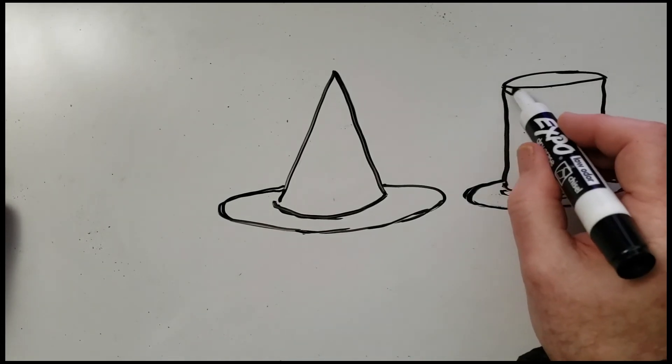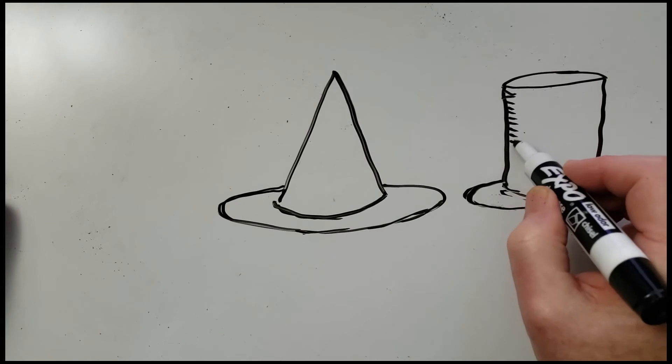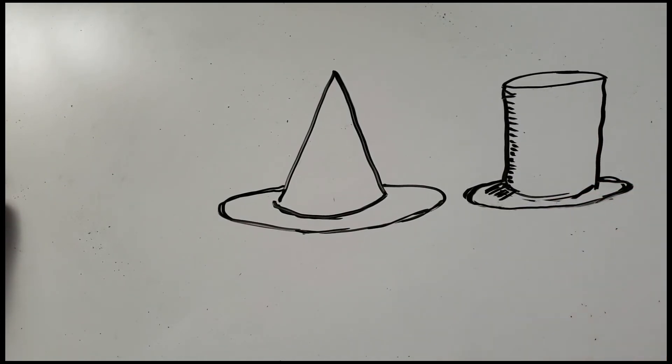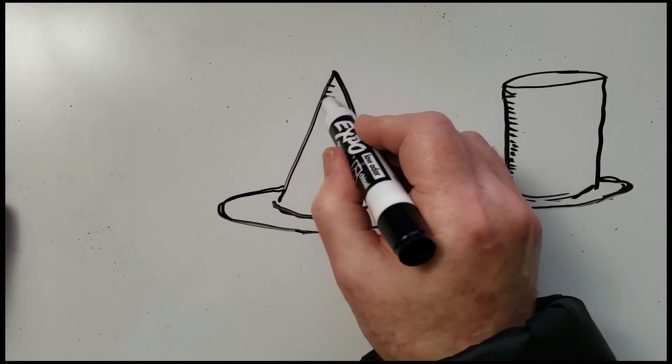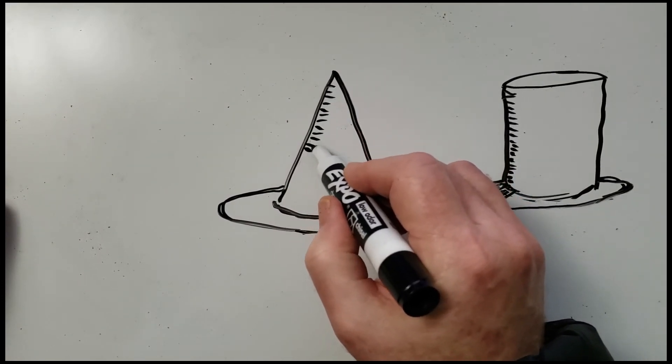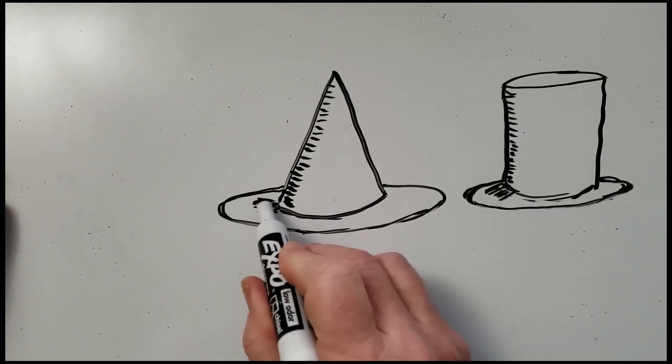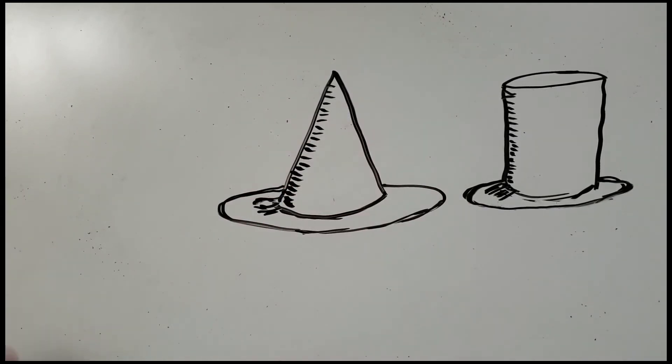And we could shade that just the way we did the can. And it would cast a little shadow. We could shade the cone just the way we did, and that would cast a little shadow too. That makes it look more three-dimensional.